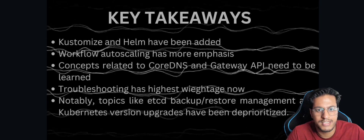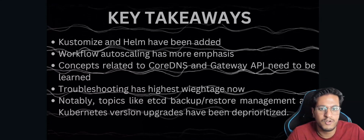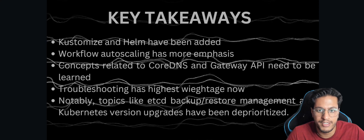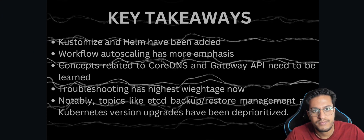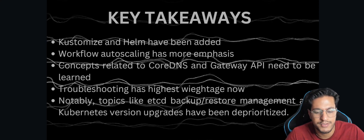The key takeaways from this video are: Helm and Customize have been added; workflow auto scaling now has some emphasis; you also have to know CoreDNS and Gateway API; and troubleshooting has increased weightage. I have some videos related to troubleshooting so you can watch those for hands-on practice, and I'll be making more troubleshooting videos in the future.